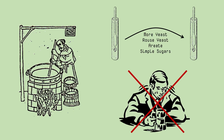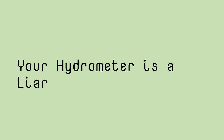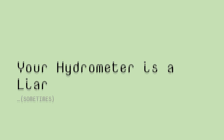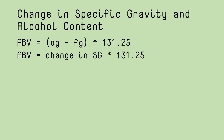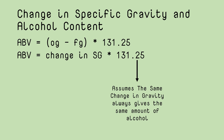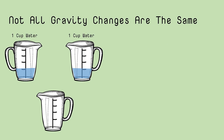You could cry into your beer, or you could accept the fact that it's not you — your hydrometer is a liar, at least sometimes. When we determine alcohol content, we use a pretty simple method: take your original gravity, subtract your final gravity, and multiply that difference by the constant 131.25. This is what most alcohol calculators and brewing programs use. What you're really doing is assuming that the same change in gravity always produces the same amount of alcohol — and this isn't really true.